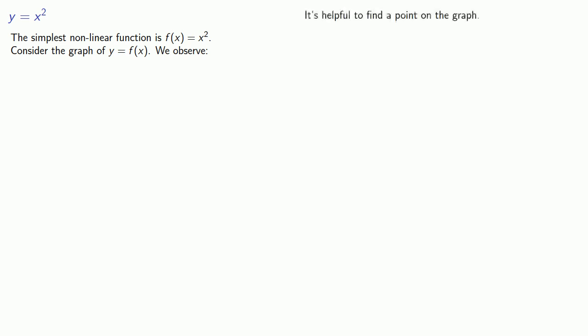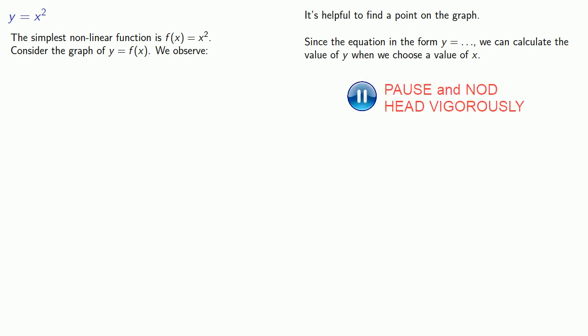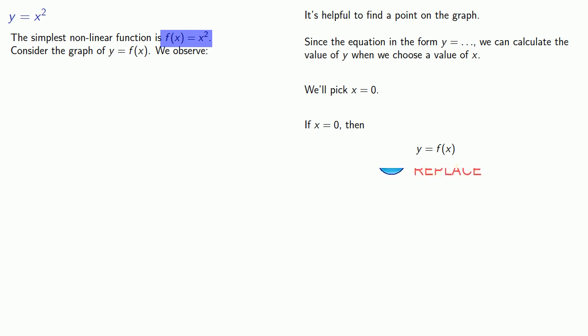First, it's helpful to find a point on the graph. Since the equation has the form y equals stuff, we can calculate the value of y when we choose the value of x. Let's choose x equals 0 and compute our value for y. y equals f(x), f(x) equals x squared, so we'll replace it. x equals 0, so we'll replace it. At this point there's nothing else to replace. 0 squared is 0, so our y value is 0. So the point (0, 0) is on the graph of y equals f(x).